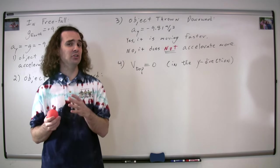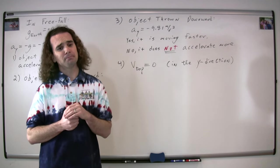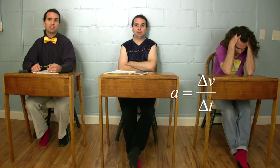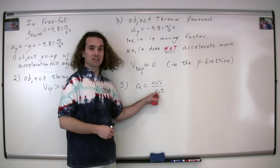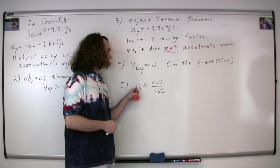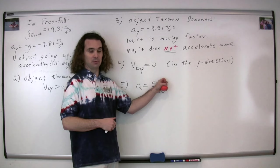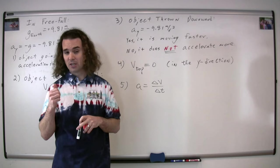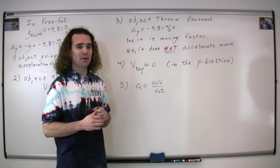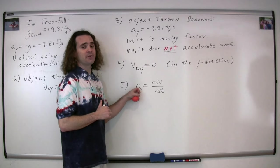To help us understand why, let's start with the equation definition for acceleration. Acceleration equals change in velocity over change in time. It's safe to assume that time doesn't stop, therefore the change in time is not going to be equal to zero. Therefore, if the acceleration at the top is equal to zero, then the change in velocity at the top must also be equal to zero, and the velocity would not change at the top. So Billy, explain to me what would happen if the acceleration at the top in the y direction were equal to zero. It would stop in mid-air and just float. Because if the velocity is zero at the top and the velocity isn't changing, then the velocity would continue to stay zero and the ball would just float there.